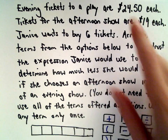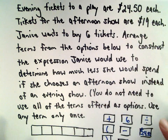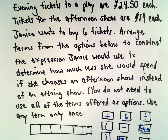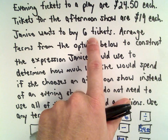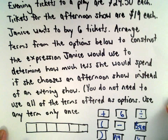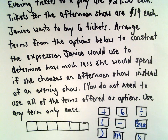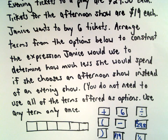Evening tickets to a play are $24.50 each, and tickets to the afternoon show are only $19 each. Janice wants to buy six tickets. We want to arrange the terms from the options below to construct the expression Janice would use to determine how much less she would spend if she chooses an afternoon show instead of an evening show — how much would she save if she bought six afternoon tickets instead of six evening tickets?